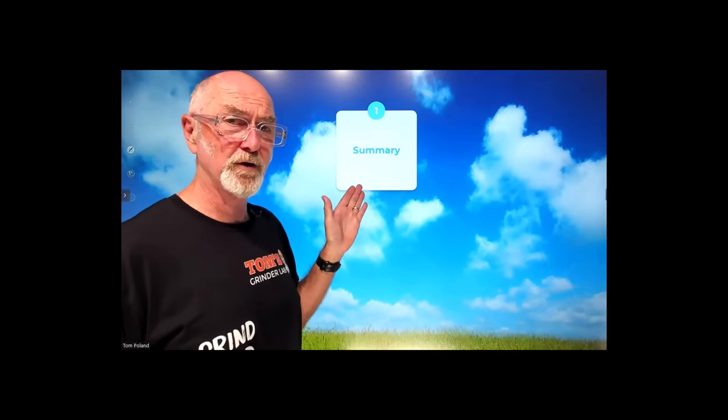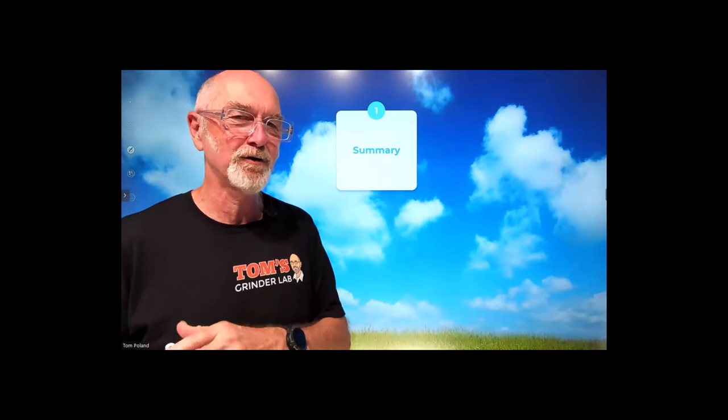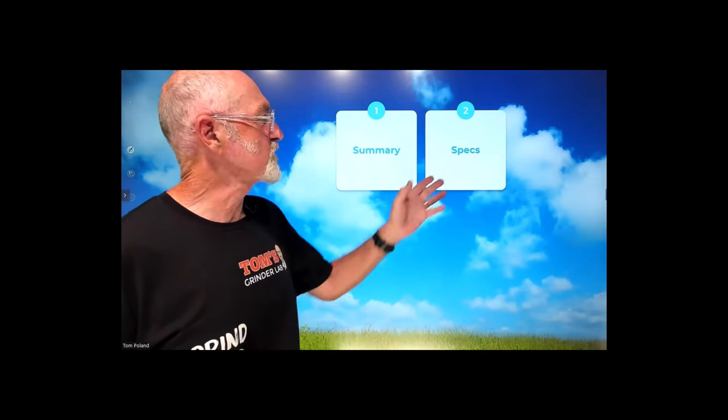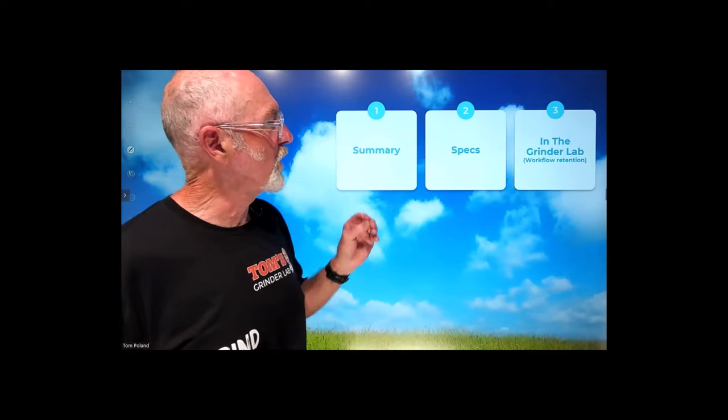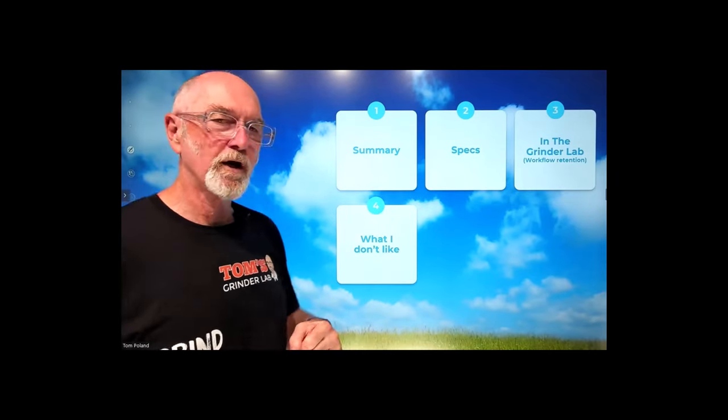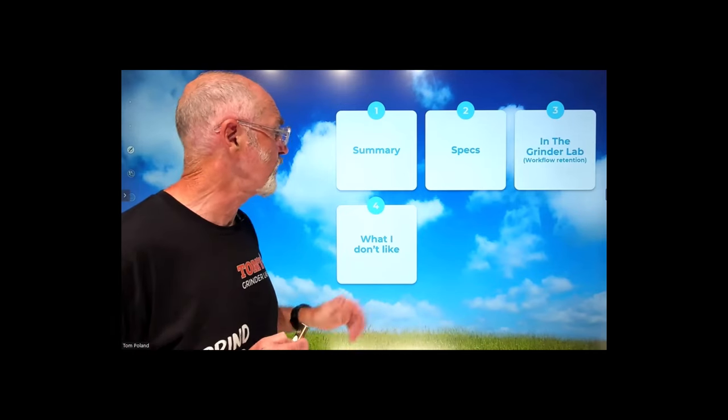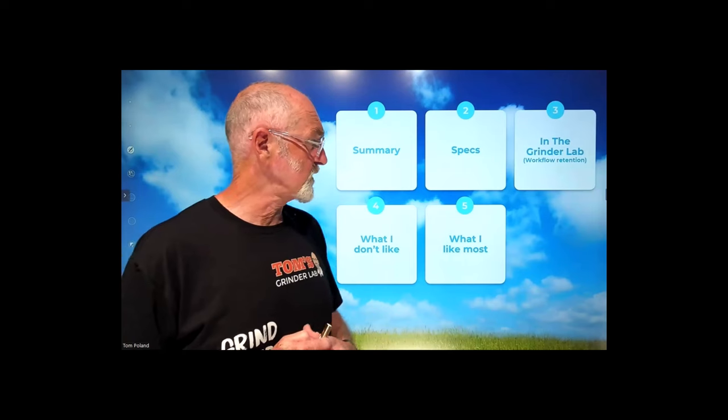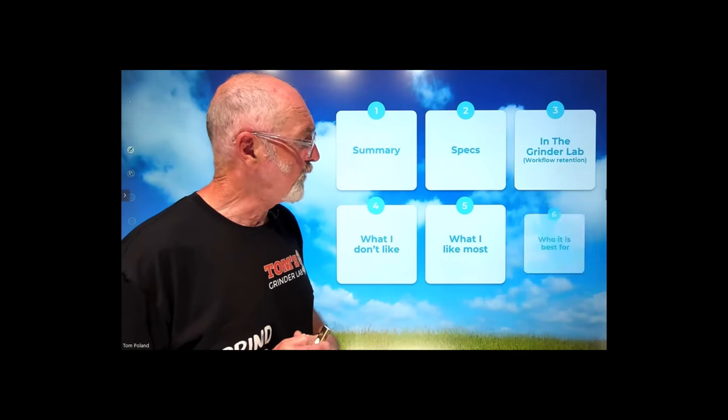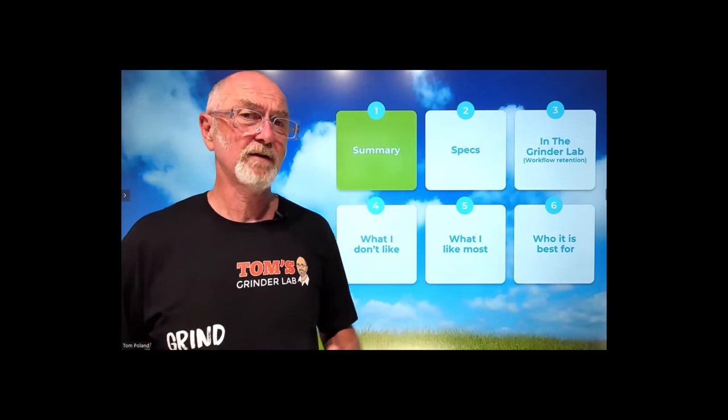So let's have a look at how we're going to roll through this. I'm going to give you the conclusion up front, because in looking at YouTube videos, I noticed that the most watched part, a lot of people just scroll to the end to get the conclusion. So I'm going to give that to you up front to save you scrolling. We'll have a look at the specs, and then we'll go into the grinder lab and have a look at workflow and retention, in particular on the DF64. That's when you'll see the grinder in action. I'll share what I don't like in this grinder, and it's only a few things that I'm really probably really nitpicking, but still there are a few things I don't really like. What I like the most, that's quite a long list. And then finally, who the grinder is probably going to be best suited for.